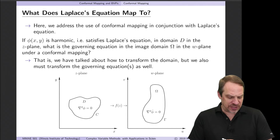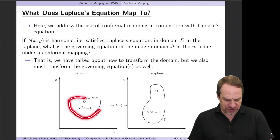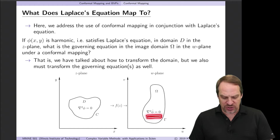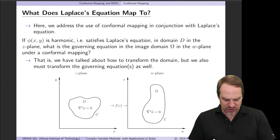What we're looking at is: if you have a function phi of x, y that is harmonic — so it satisfies Laplace's equation — in a domain D in the z-plane, what does that transform into in the w-plane, where we have the image domain capital omega, under a conformal mapping f of z?